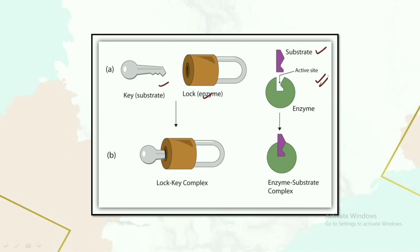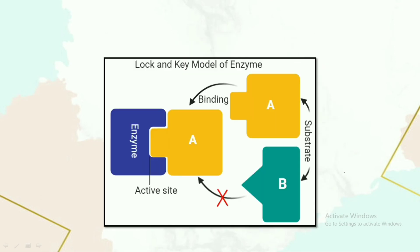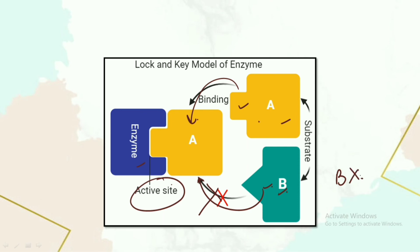In the lock and key model, the substrate is compared to the key and the enzyme's active site to the lock. When the key is inserted into the lock, an enzyme-substrate complex forms. If substrate A fits the active site of the enzyme, it binds; but substrate B will not bind because of the difference in shape between the active site and substrate B.